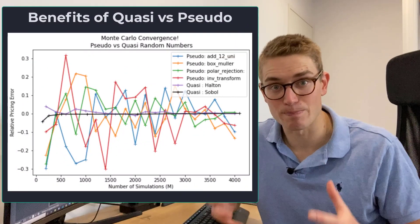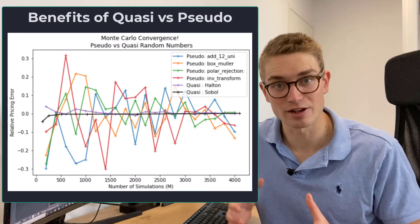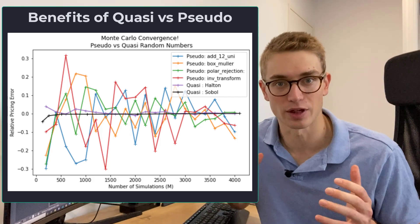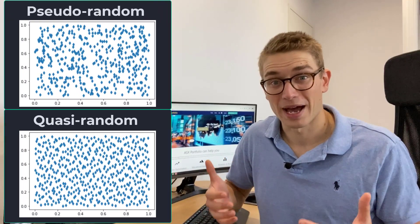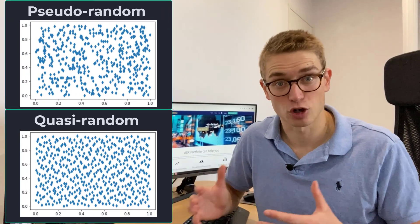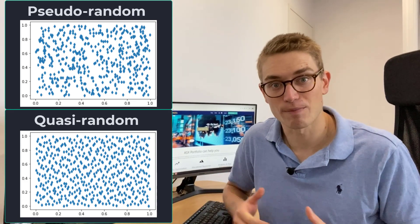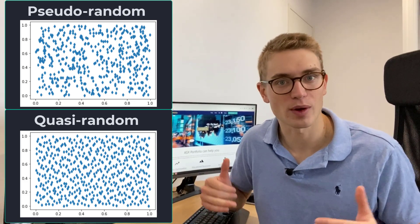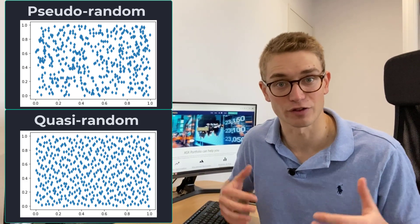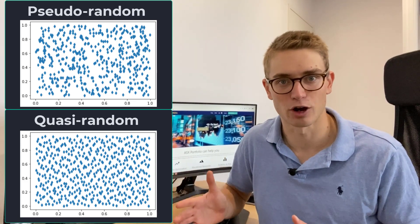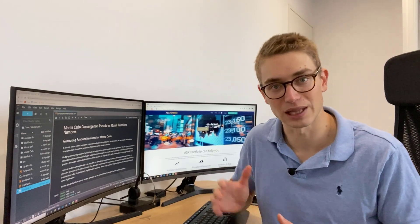Today we're going to learn about the complete benefits of using quasi-random numbers and sequences in your Monte Carlo simulation to get the best accuracy with the lowest number of random variables. We're going to talk about the disadvantages of using pseudorandom numbers compared to quasi-random numbers and then the benefits you can get in your Monte Carlo simulation. To date we've been looking at variance reduction techniques where the whole aim has been to decrease the amount of random numbers we have to compute in order to get the most accurate option valuation possible, and we're going to see just how much of a difference it makes using quasi-random numbers.